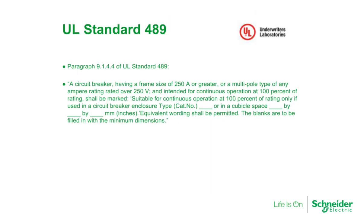When applying 100% rated circuit breakers, there are several UL and NEC restrictions which must be kept in mind. If any of these restrictions are not met, the 100% rated circuit breaker becomes standard and must be applied at the sum of the non-continuous loads plus 125% of the continuous load.